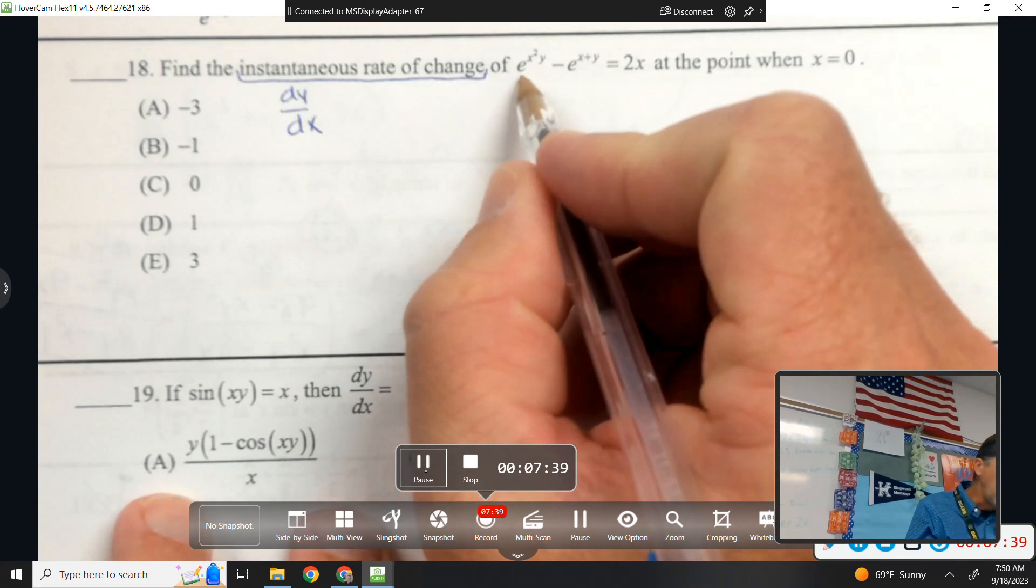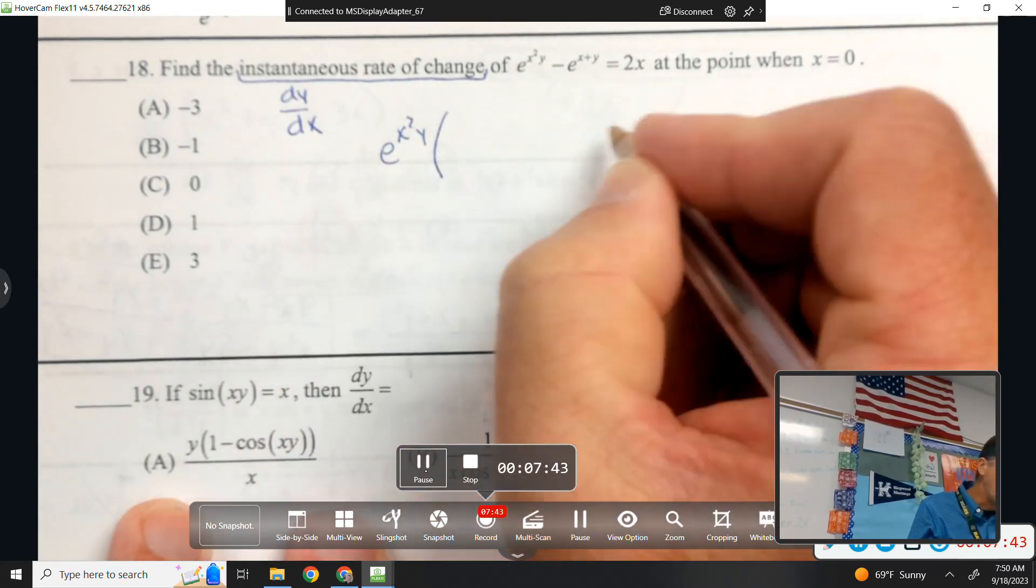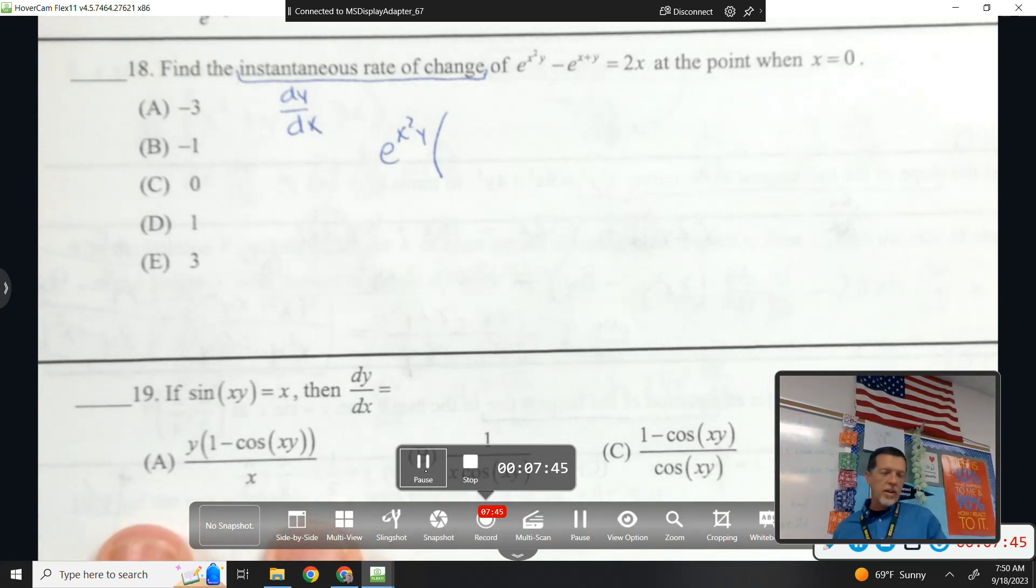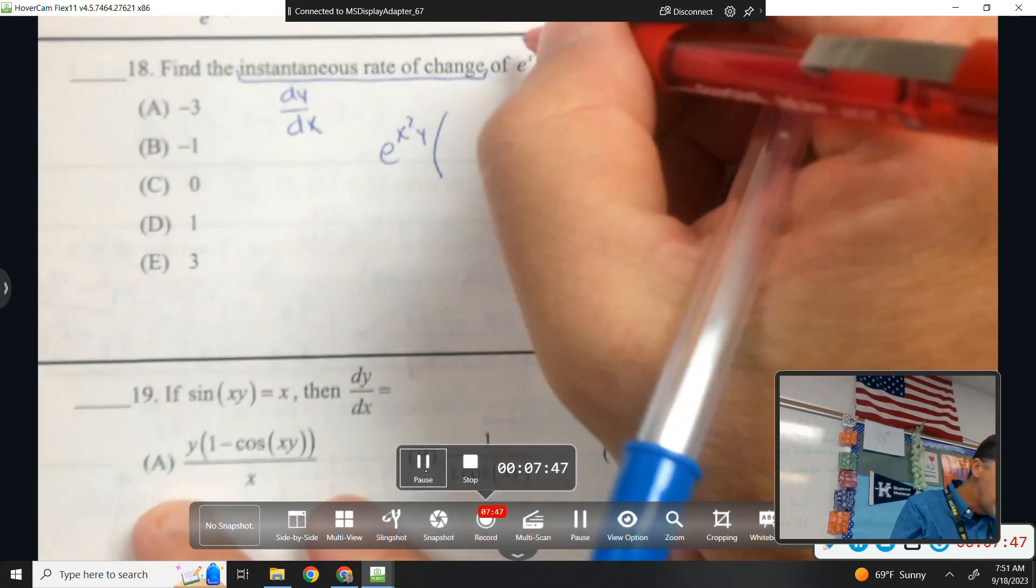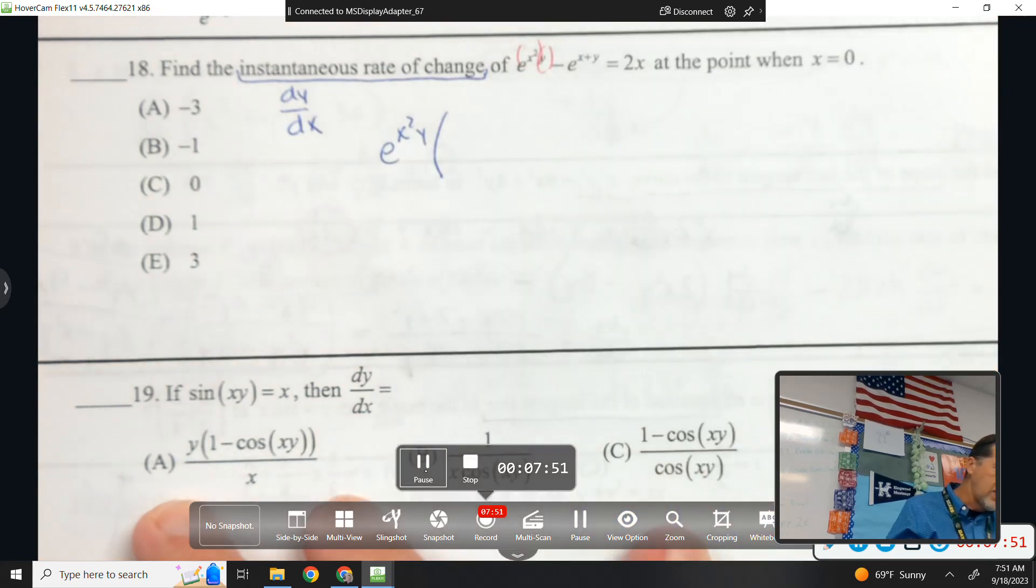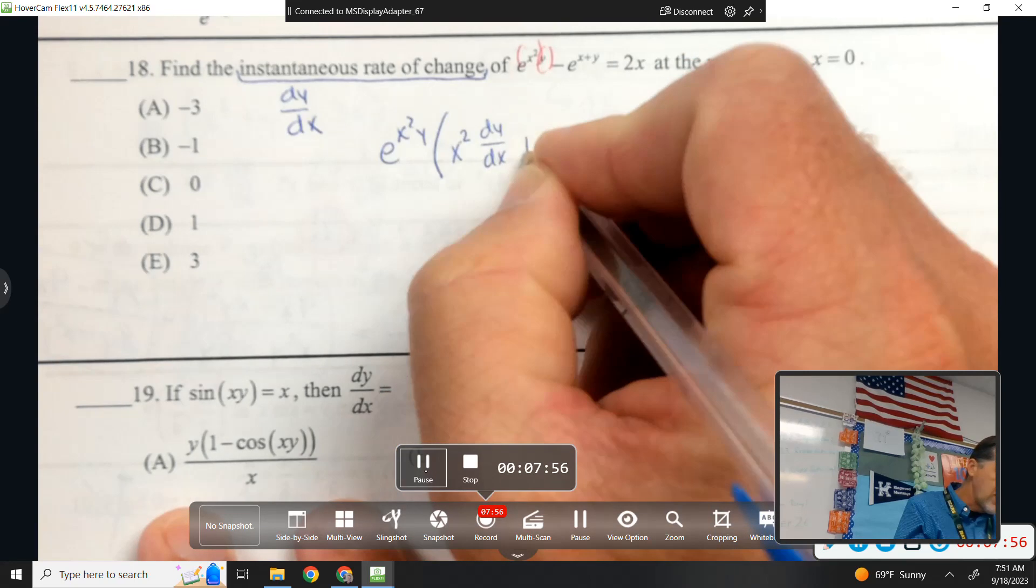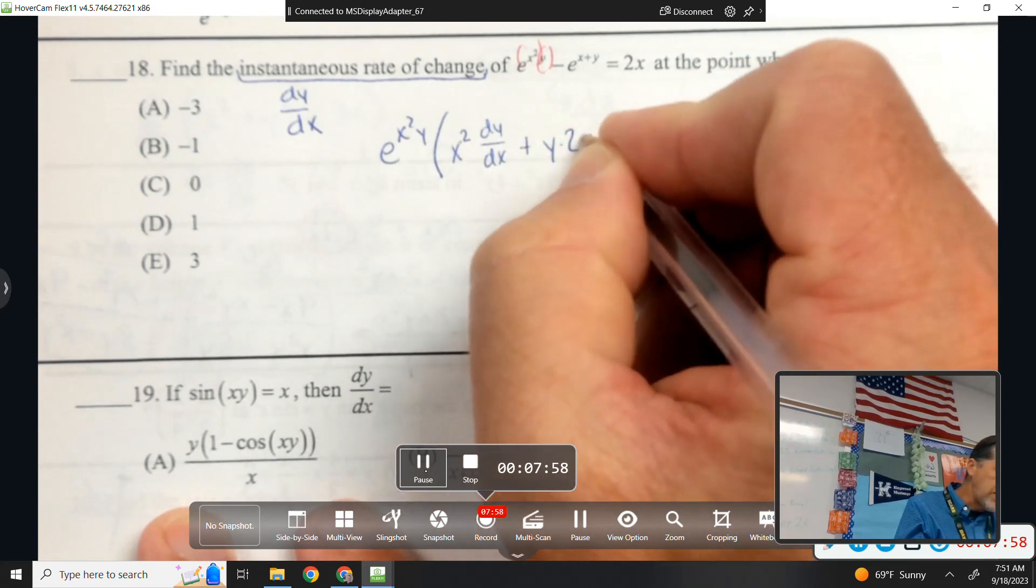Okay, so the derivative of e to the x squared y is e to the x squared y. But then chain rule. I need the derivative of x squared y, which would be a product rule thing. So first times derivative of the second plus second times derivative of the first.